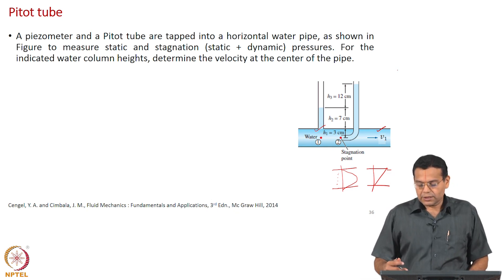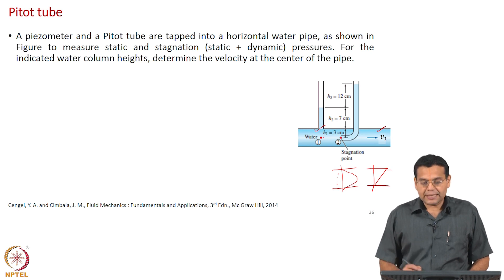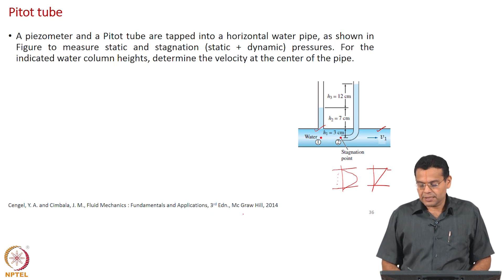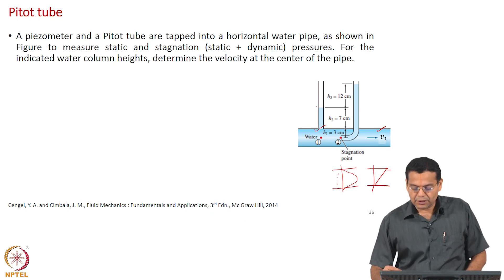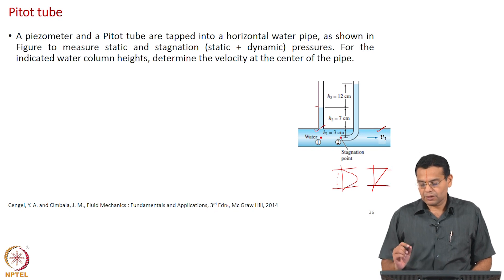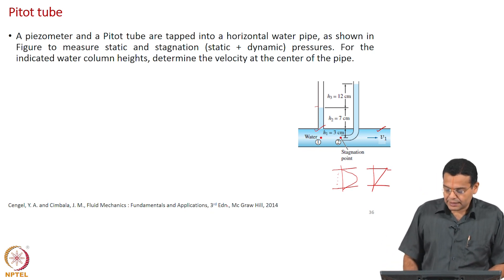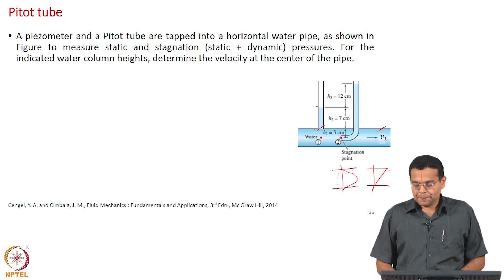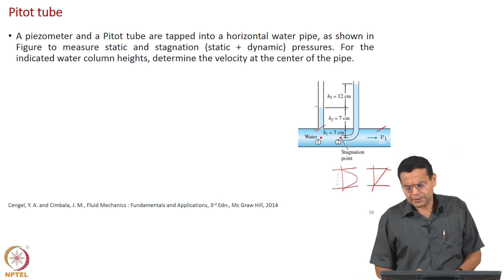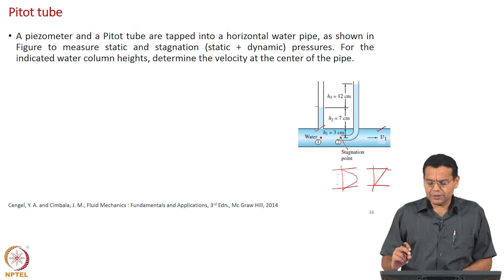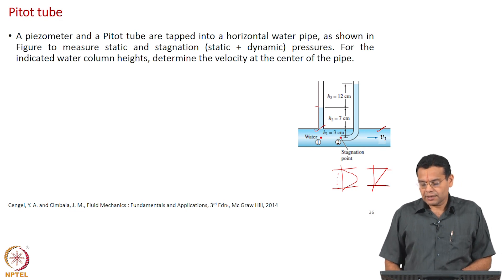Water rises based on the static pressure at that particular location, and that static pressure is balanced by the level to which water rises. You make a hole, attach a small tube, water will rise, and that rise represents the static pressure at that particular point. The static pressure is represented by the height to which the water level rises.